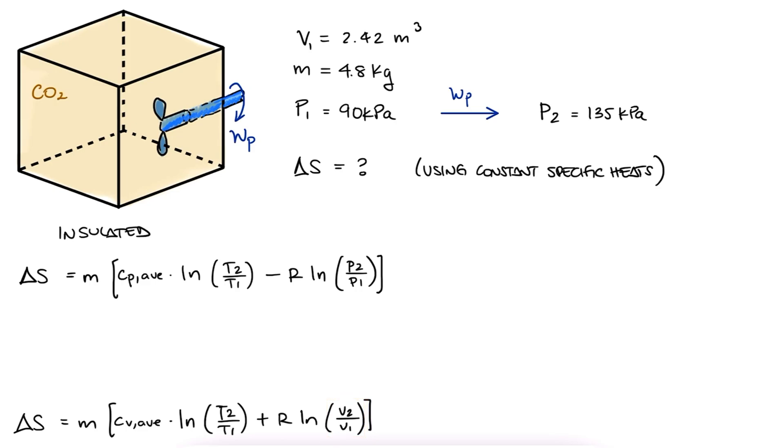Now you might think that since we don't have the volumes, we should go with the first one, but what we need is the ratio between volumes. Since this is a rigid tank, V1 equals V2, and therefore V2 over V1 is 1, and natural log of 1 is 0. This means the second expression is actually quicker to calculate.